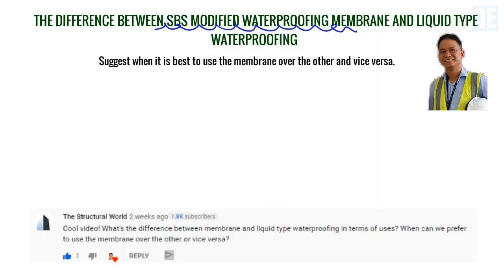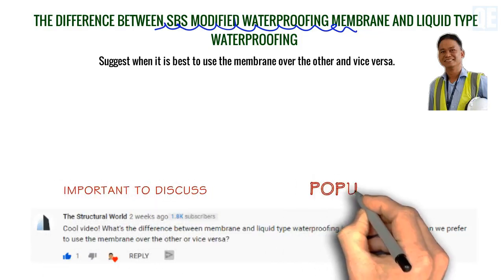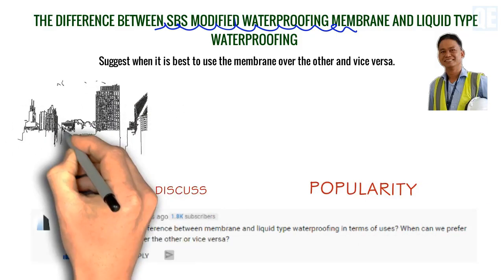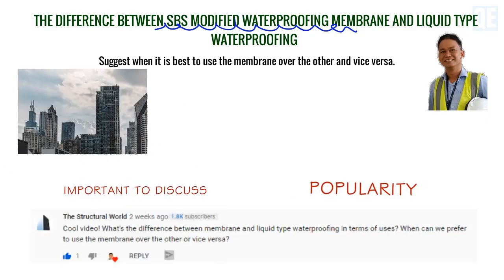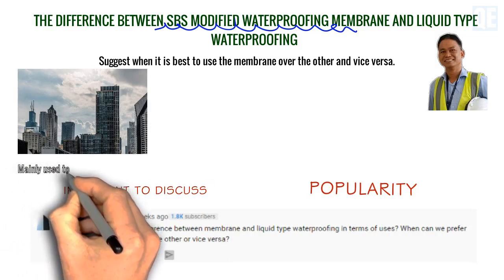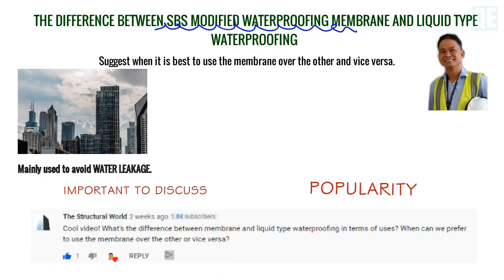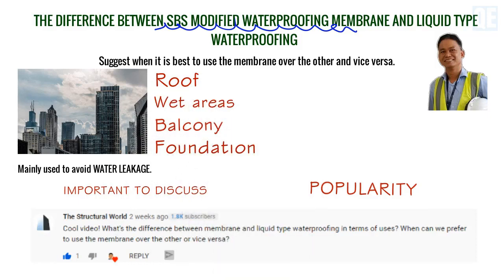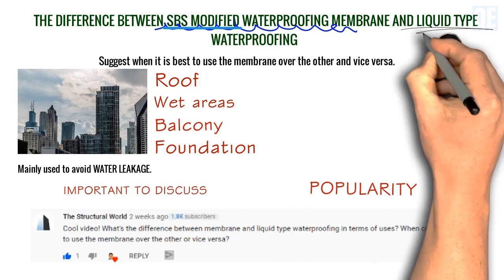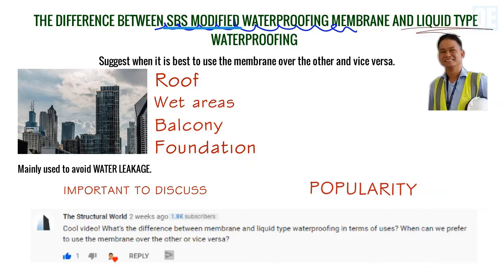The materials we mentioned earlier are important to discuss because of their popularity. They are a significant part in almost all types of building projects. Furthermore, they are mainly used to avoid water leakage, especially on the foundation, balcony, roof, and wet areas of a building. These two materials each have their own characteristics and advantages for the different areas where they are used.